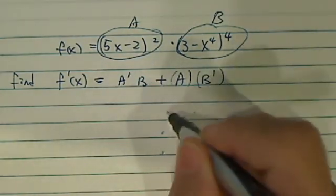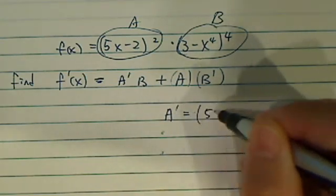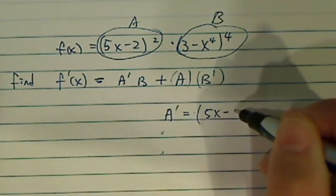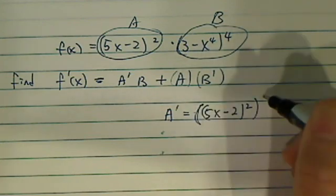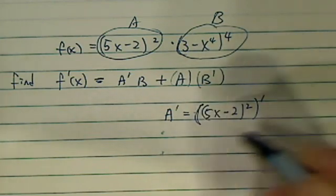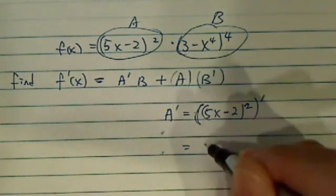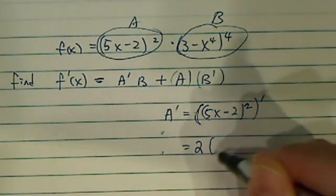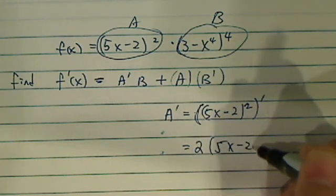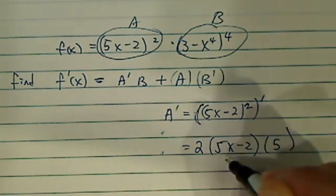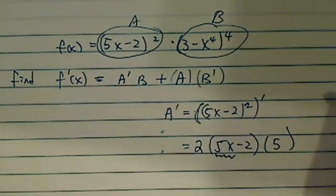Then what you do is write it out. The derivative of the first term is 5x squared — 5 minus 2 — the whole thing squared. And I'm going to take the derivative of this one. Since it's a chain rule, you've got to use 2, times 5x minus 2. Don't forget about 5, because the derivative of this shell is 5.